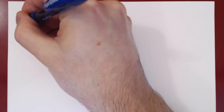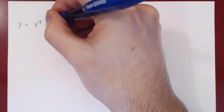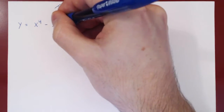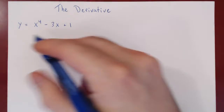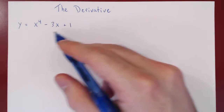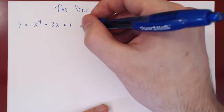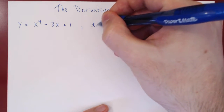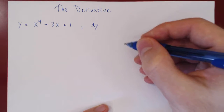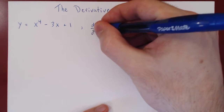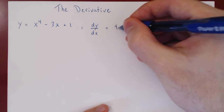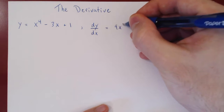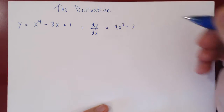Suppose that y is the function x to the 4 minus 3x plus 1. Here y is a function of x, so we find the derivative of y with respect to x, dy over dx, and that would be simply 4x cubed minus 3.